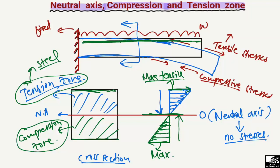We always provide steel bars where there is tension, because steel bars have high tensile strength compared to concrete. Where we have tensile stresses, we always provide reinforcement. That is why reinforcement bars are always provided at the top of the cantilever beam, unlike the simply supported beam. Hope you guys understand — don't forget to subscribe to our channel for daily civil engineering videos. Thank you for watching.